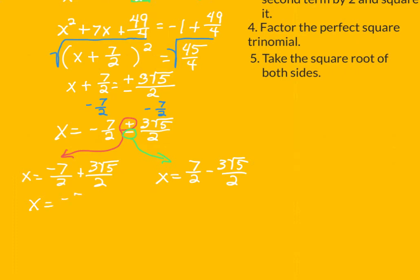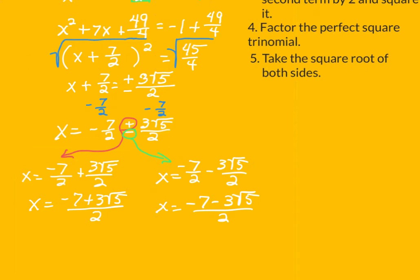We often prefer to have our answers written as a single fraction. So negative 7 plus 3 square root of 5, all over 2, would be one answer. And I notice I dropped the negative when re-copying here — be careful, do not do that. Watch for sign errors like that; they are really easy to make. But those are our two answers for that problem.